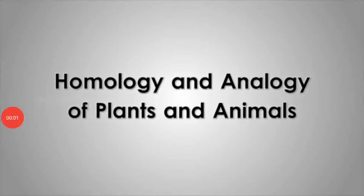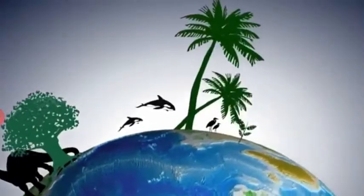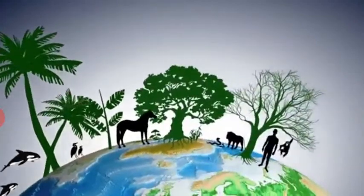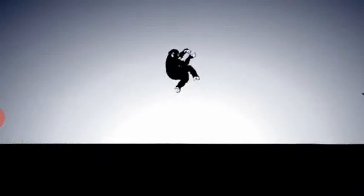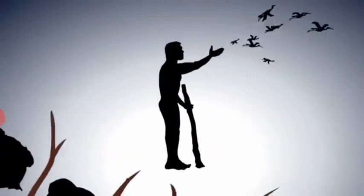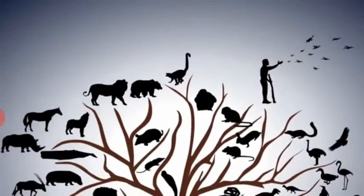The central idea of biological evolution is that all life on earth shares a common ancestor. There is much evidence for the theory of evolution. Homologous and analogous organs in animals and plants are considered to be major evidence in favor of the theory of evolution.